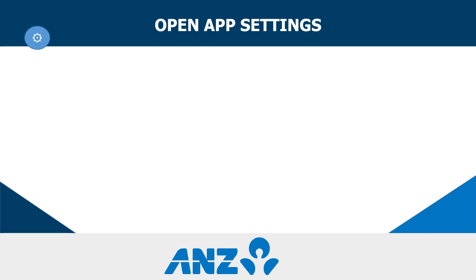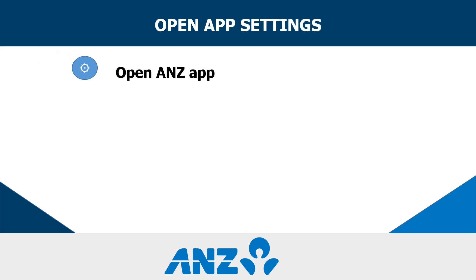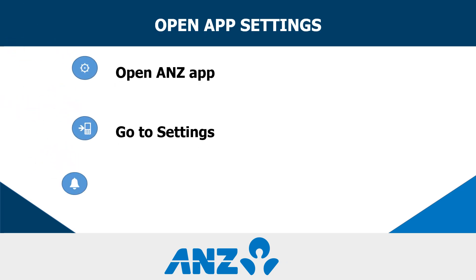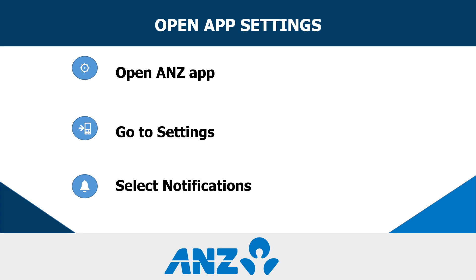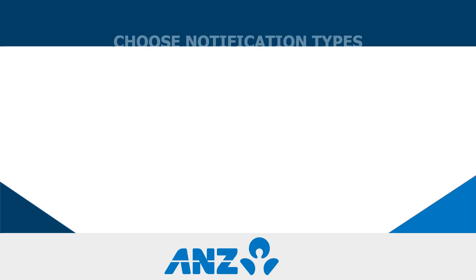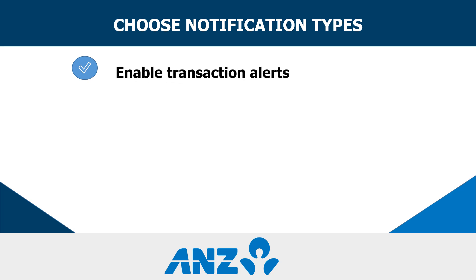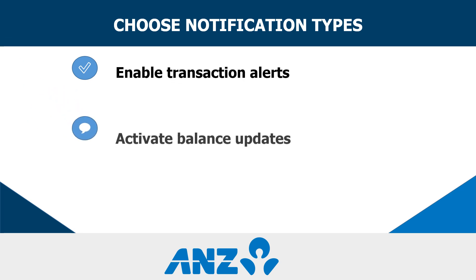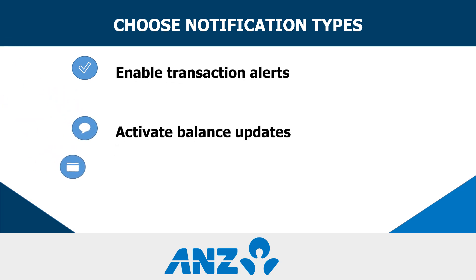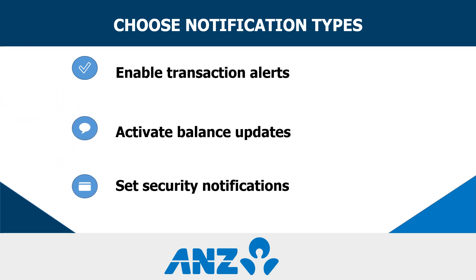Open the ANZ app on your device and tap on Settings. From there, select Notifications to start configuring your alert preferences. Choose which types of notifications you want to receive. You can activate alerts for transactions, balance changes, and important security updates.